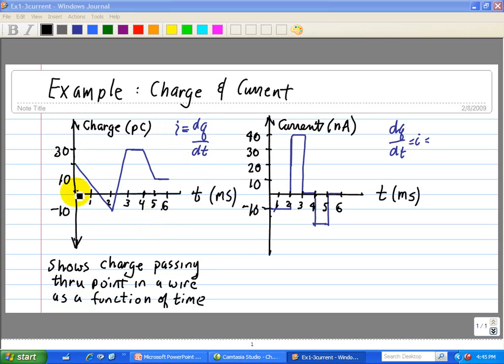On the vertical axis, the units here is given as picocoulombs. And in the horizontal axis of time, we have in the milliseconds. So what we need to do is just calculate the slope at each of these points in time.